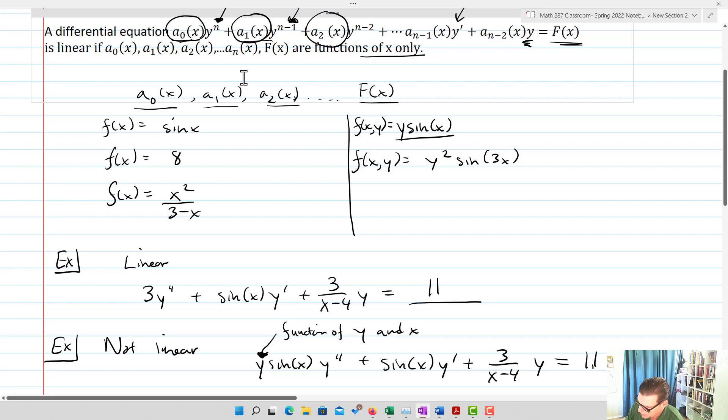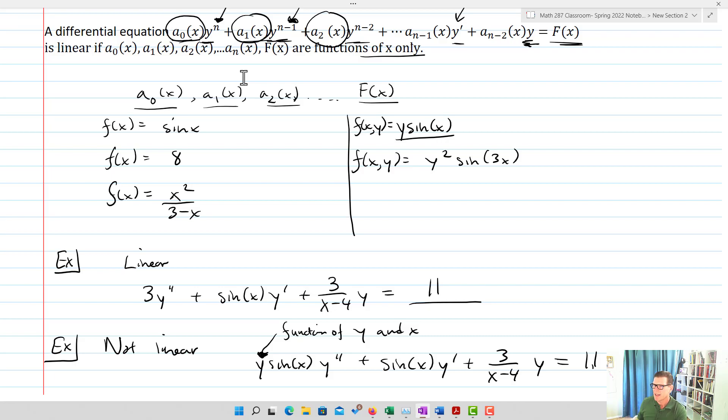As a note, the reason why we call it linear is because none of these derivatives are to any other power other than the power of one, and that's really important - no functions of y. Consequently, we only have powers of one. That's basically our idea when we talk about something being linear - it's linear because all those derivatives and the function y are only to a power of one, and that's the concept.